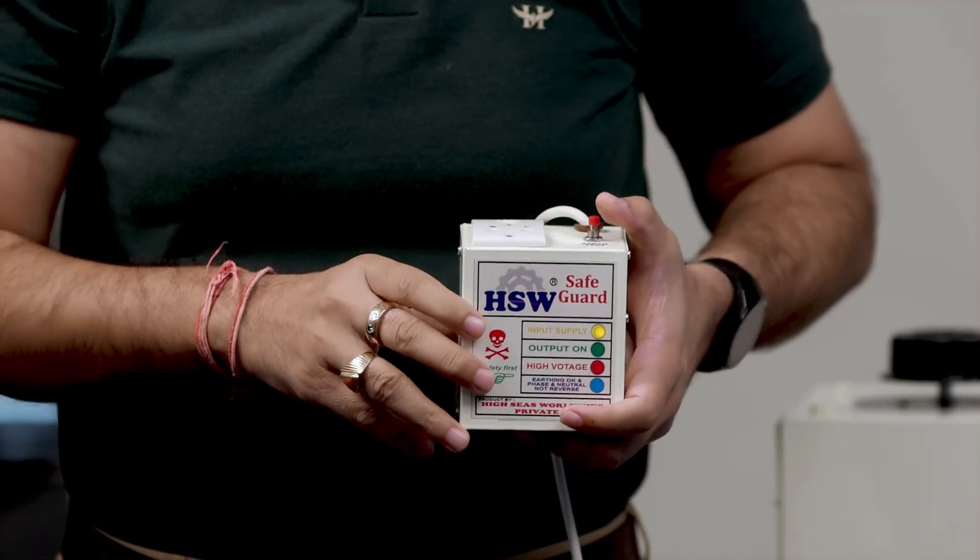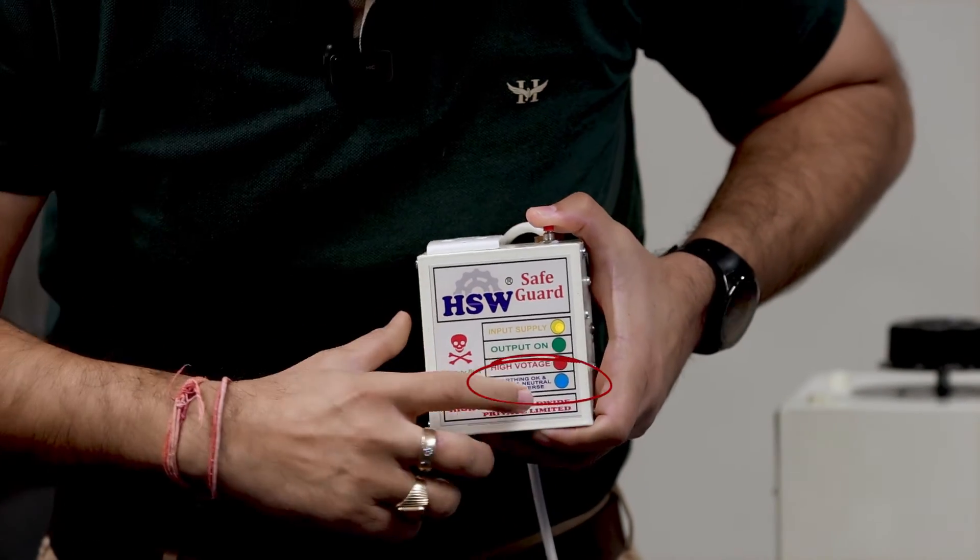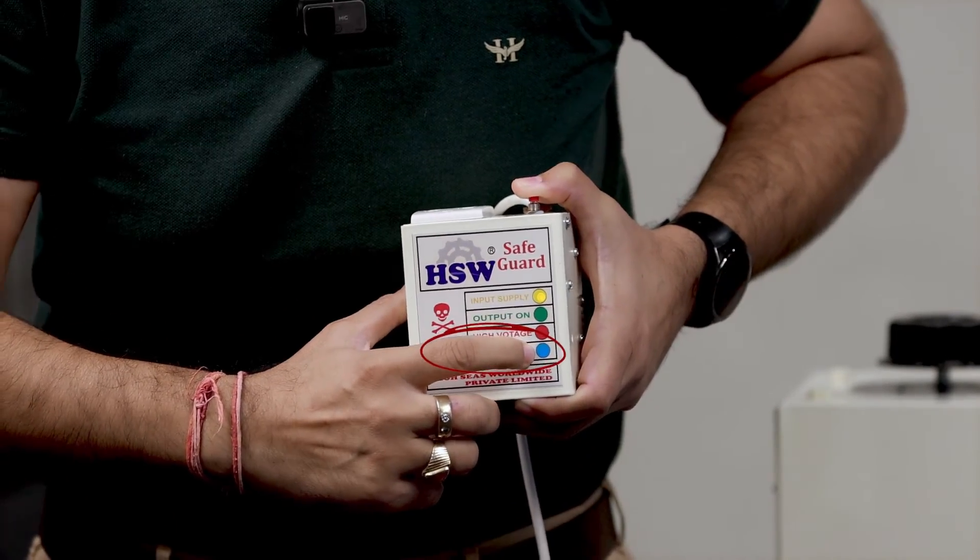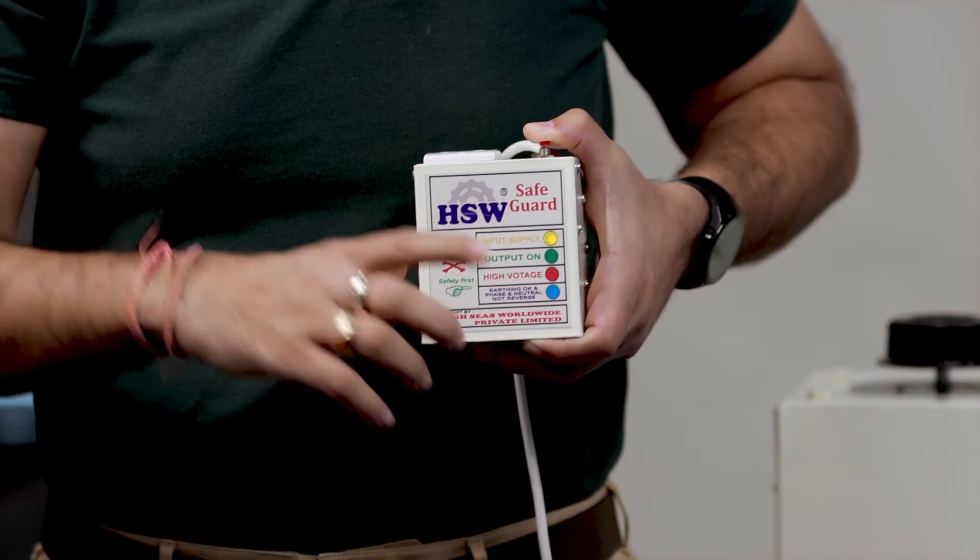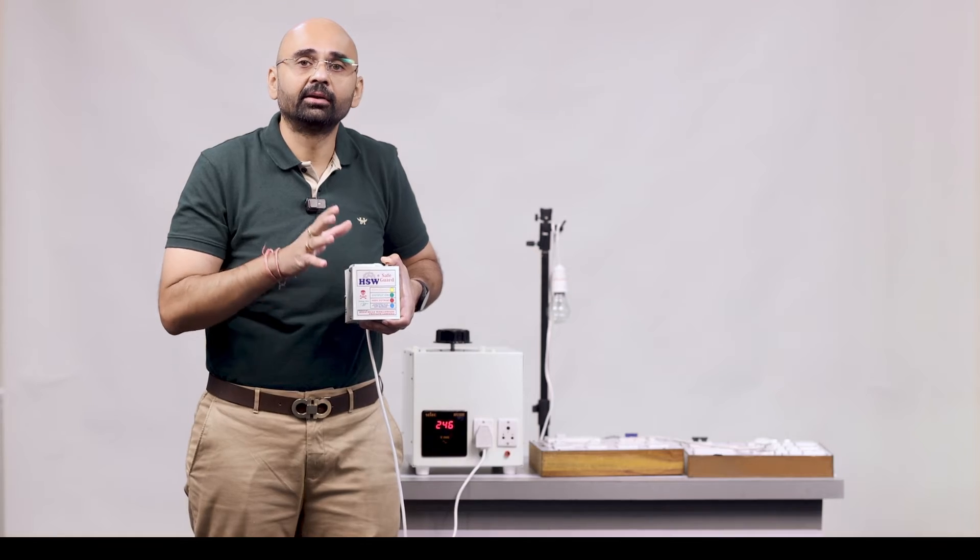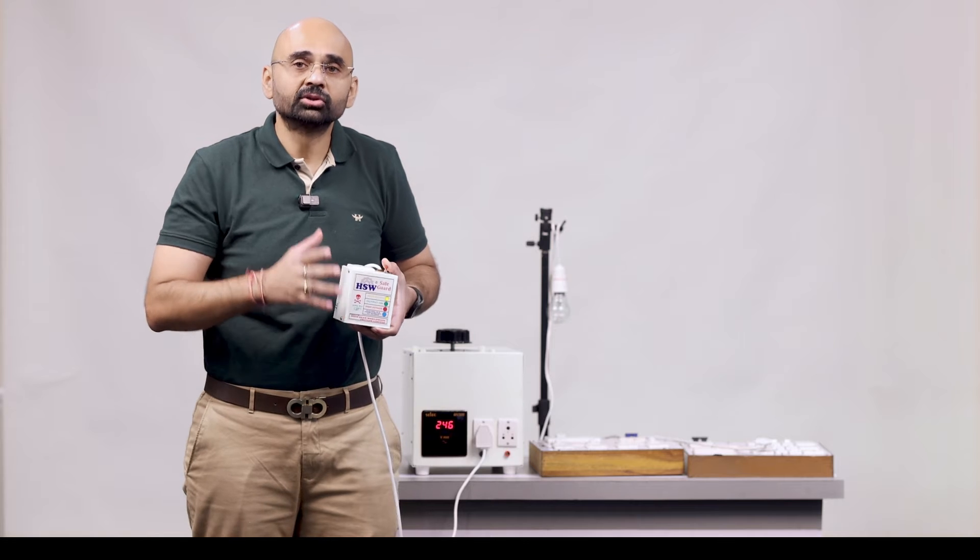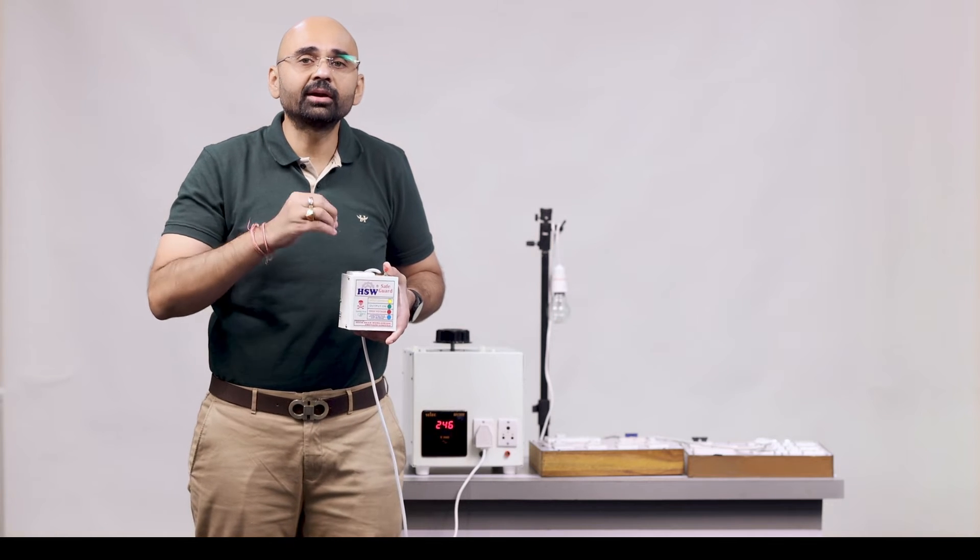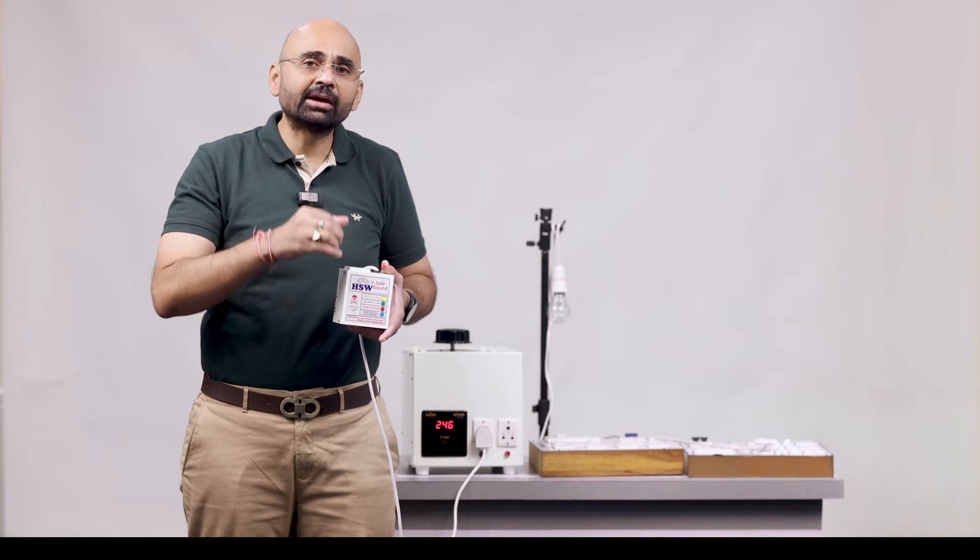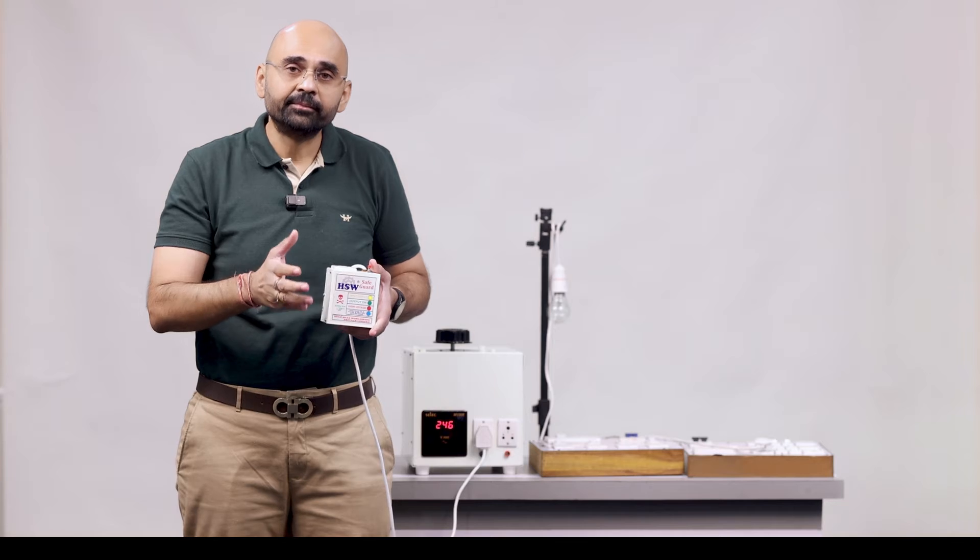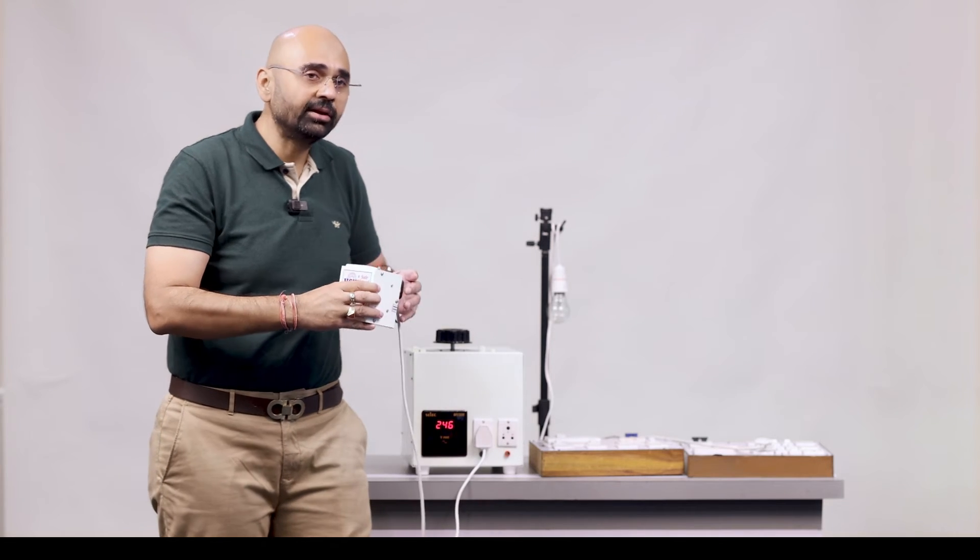So now when I press this earth test you can see that blue light is not on. That means the neutral reverse or earthing is not proper. So that's how you check the neutral reverse and earthing.